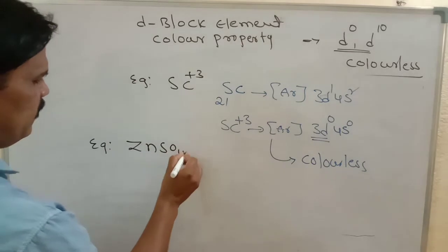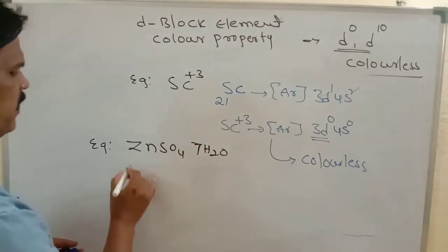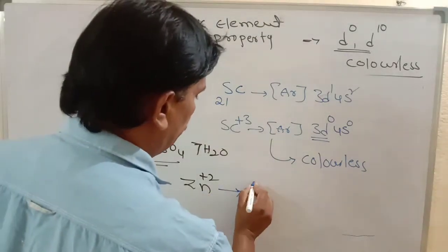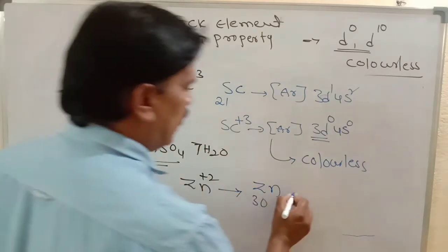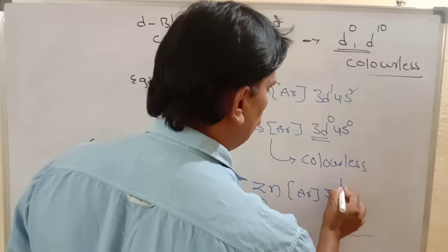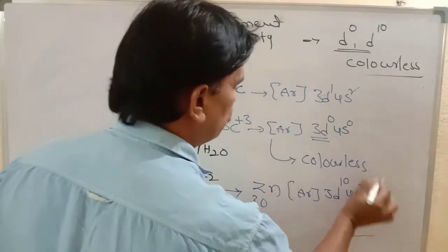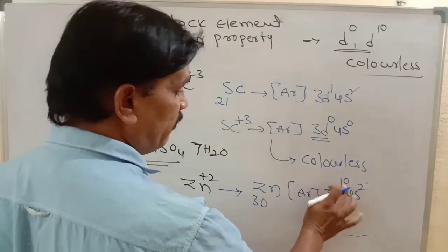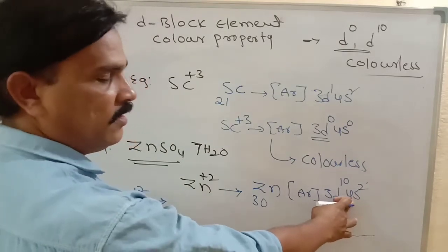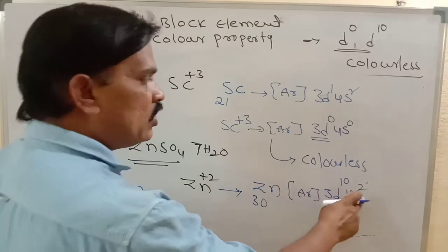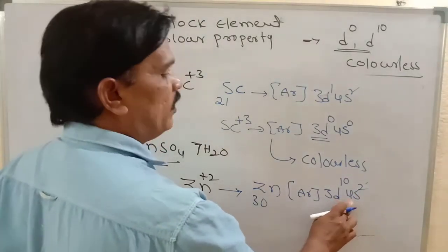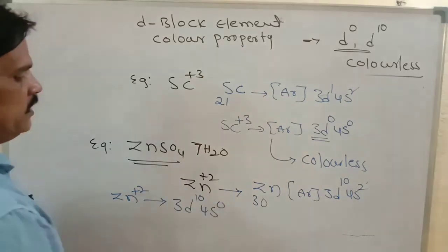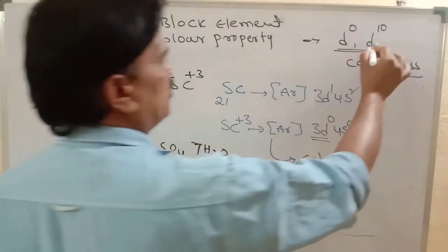Another example: ZnSO₄·7H₂O. Zinc is in a +2 oxidation state. Zinc has atomic number 30 and electronic configuration [Ar] 3D¹⁰ 4S². For Zn²⁺, we remove two electrons from the 4S orbital only — not from 3D — because 4S is farther from the nucleus and has less nuclear attraction. So Zn²⁺ gives 3D¹⁰ 4S⁰, which is a D-10 configuration.